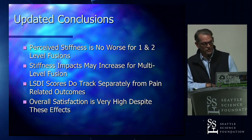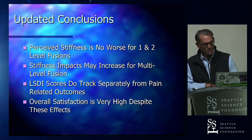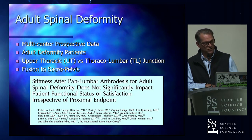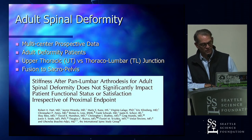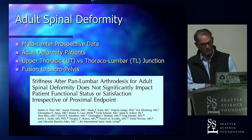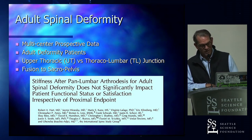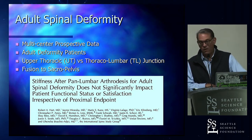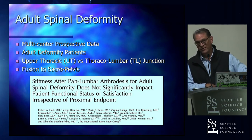To summarize the updated findings: perceived stiffness seems no worse — maybe even a bit better — for short segments of one and two levels of fusion. It does seem to increase for multi-level fusions. The LSDI tracks separately from ODI and pain-related outcomes. But patient satisfaction is very high despite those effects. In the multi-center ISSG study, even with fusions to T10 or T4, patients with spinal deformity are happy and not significantly worsened.